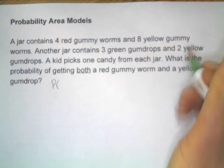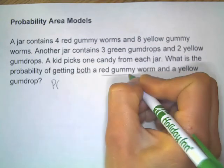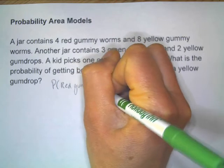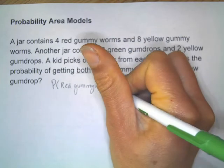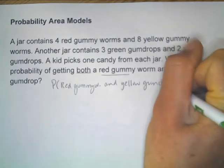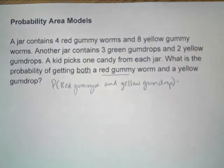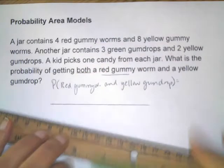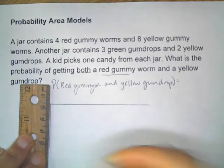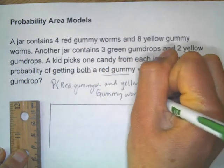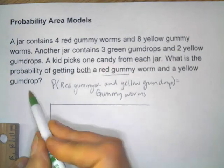I'm looking for the probability of a red gummy worm and a yellow gumdrop. One strategy is to create an area model. We've got two different things we're doing — one is the gummy worms and the other is the gumdrops.